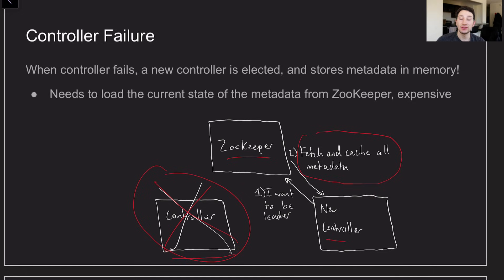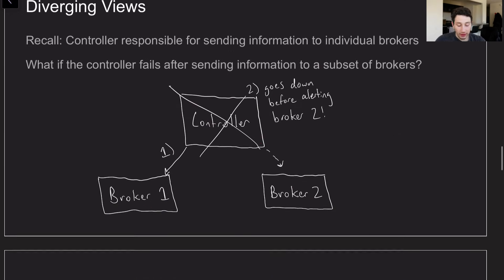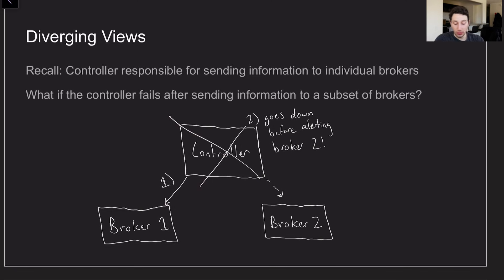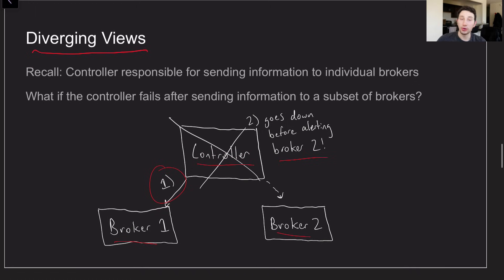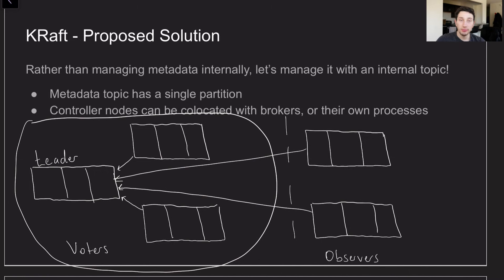Sure you can fail over, but ten minutes of your Kafka cluster not working is going to be very problematic for certain services. The last issue to touch on is diverging views. The controller and ZooKeeper themselves can diverge, but also keep in mind that the controller is the one disseminating updates to each broker whenever there's a metadata change. So if the controller makes some metadata change, alerts broker one in step one, and then goes down before it can tell broker two — rectifying that down the line is a very complex process. A new controller gets elected and has to figure out what metadata change got sent to what broker, which is not trivial.